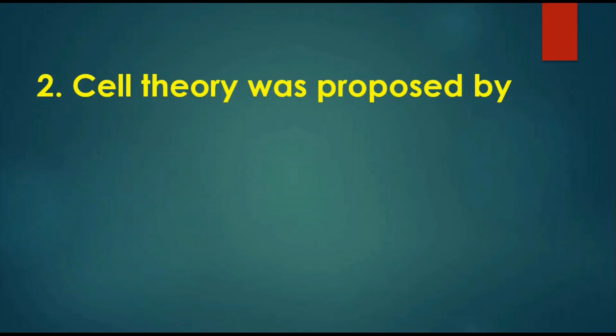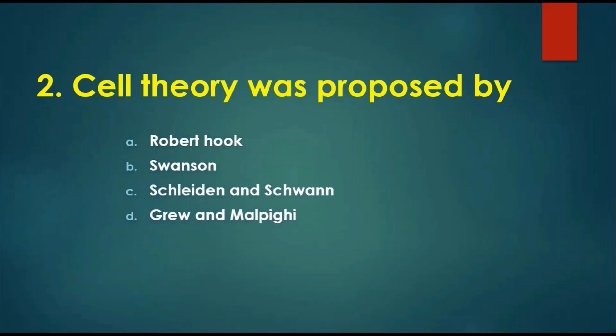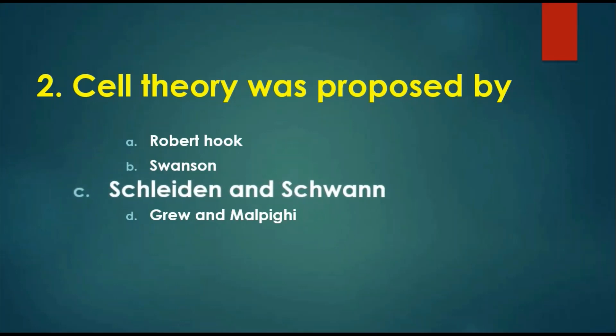Question 2: Cell theory was proposed by — options are: A) Robert Hooke, B) Swanson, C) Schleiden and Schwann, D) Grew and Malpighi. Robert Hooke is involved in the discovery of the cell but not the cell theory. Swanson is involved in a literature-based discovery in the 1980s. Schleiden and Schwann are the ones who proposed the cell theory. Grew is a pioneer of dactyloscopy and Malpighi was the first person to see blood capillaries in a fish tail — involved in the discovery of the link between arteries and veins. So the answer is Schleiden and Schwann.